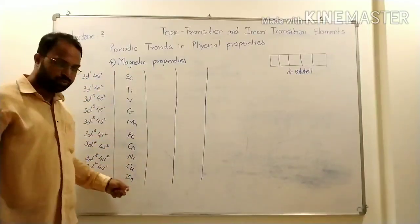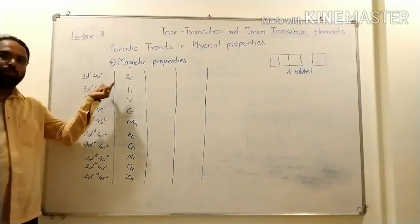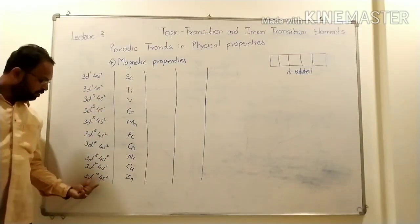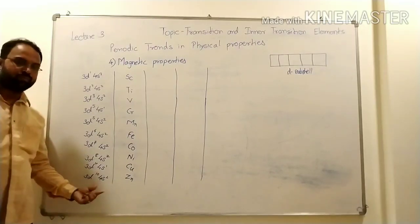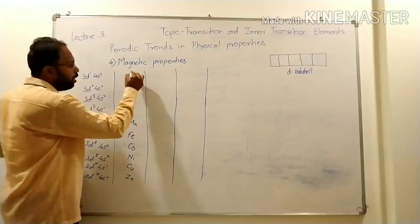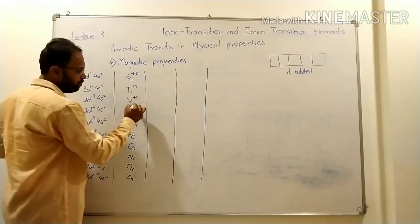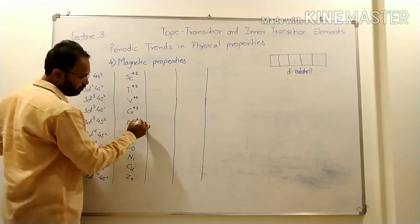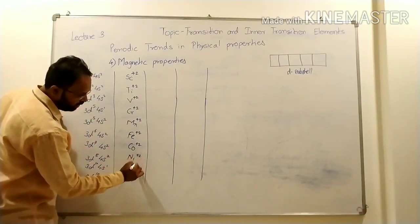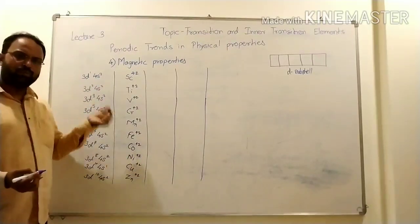These are the electronic configurations of the outer orbitals, from 3D1, 4S2 through to 3D10, 4S2. Now, all elements form plus-two ions, which means removal of two electrons from 4S.